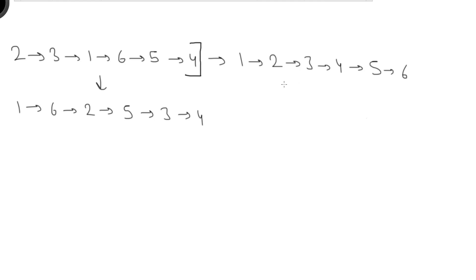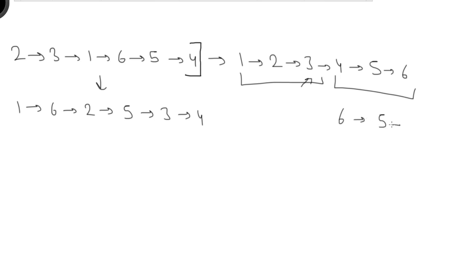Once we have the sorted linked list, we divide it into two lists using the middle element. We find the middle element — in this case it's 3 — so the second list starts after the middle element. The second list is 4, 5, 6 and the first list is 1, 2, 3. Then we reverse the second list, so it becomes 6, 5, 4.